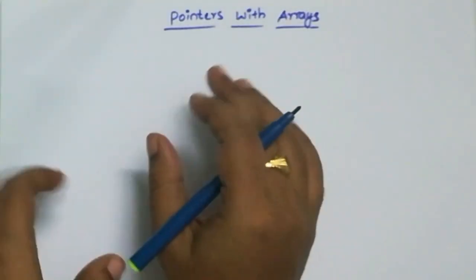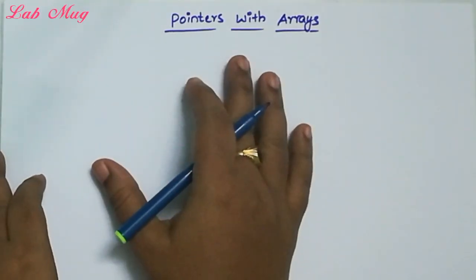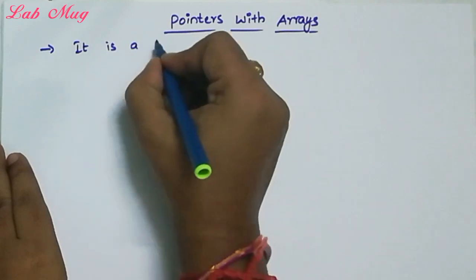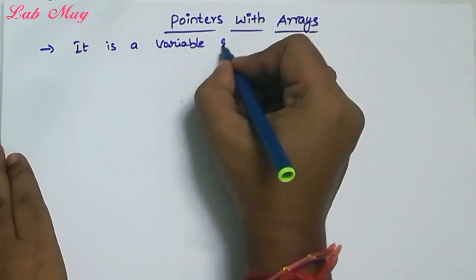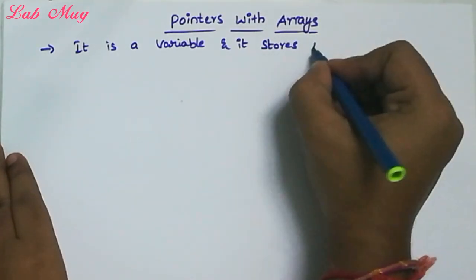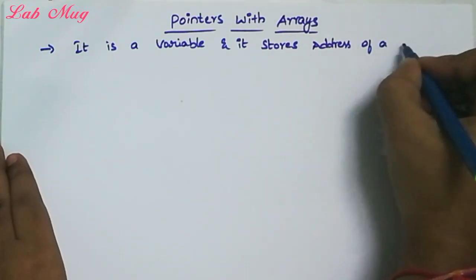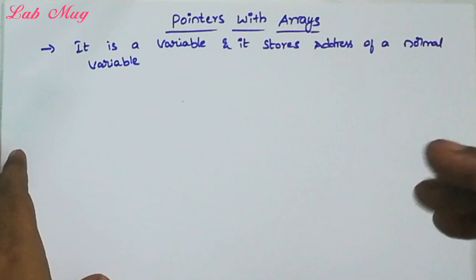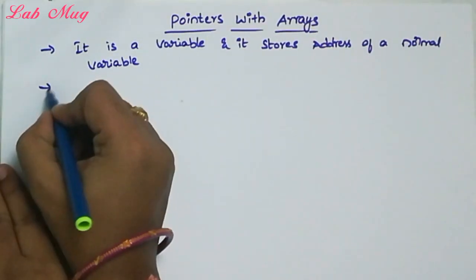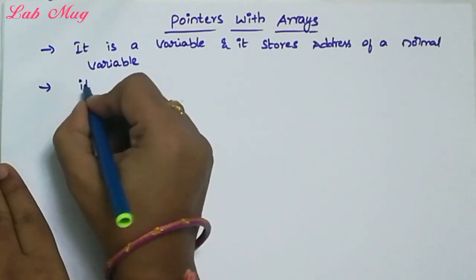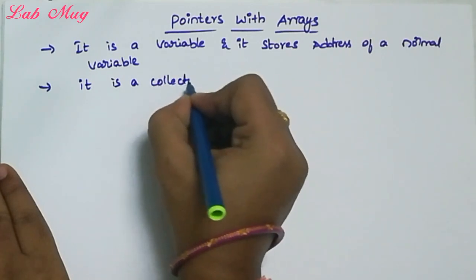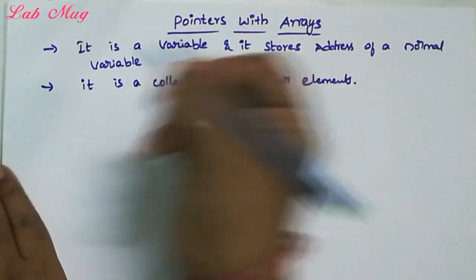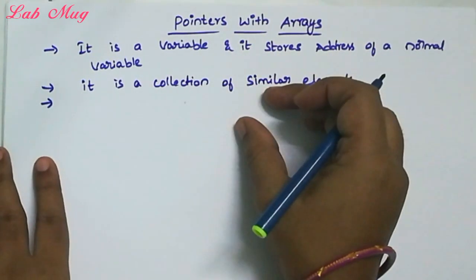Hi students, this is the Pointers with Arrays topic. Already in the previous video we covered the Pointers topic. A pointer is a variable and it stores the address of a normal variable. An array is a collection of similar elements. Those are the definitions of pointers and arrays.